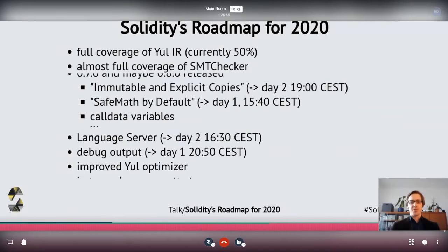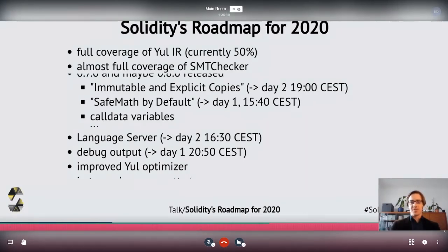Tomorrow at 4:30 p.m. we also want to improve the output of the compiler that can be used for debuggers or more general code inspection routines. This is an initiative that was started by the Truffle team last year, or maybe even two years ago, and some more teams have joined in. The discussion about that will be today at 8:50 p.m.